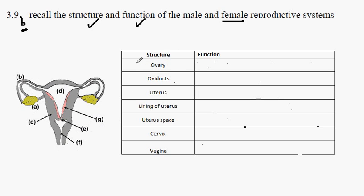Part A is the ovary, and this is where meiosis occurs and the production of eggs — the female gamete.